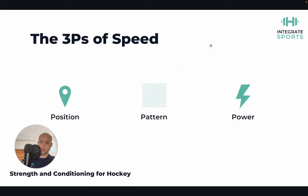The Three P's of speed can be broken down into position, pattern and power. This is a simple model to work through to determine which steps you should be working through first. Often people just go out and sprint — that would be the power aspect — but that would be like, taking an analogy of learning to drive a car, trying to floor the car straight away without having actually learnt how to change gear effectively, how to use the clutch, how to brake — all these important aspects which come before learning how to drive a car at speed safely.